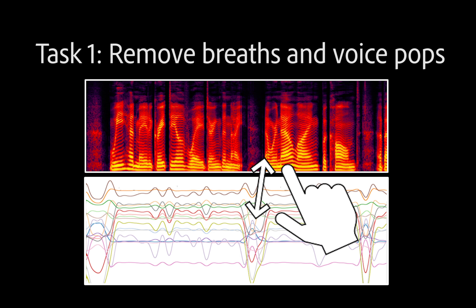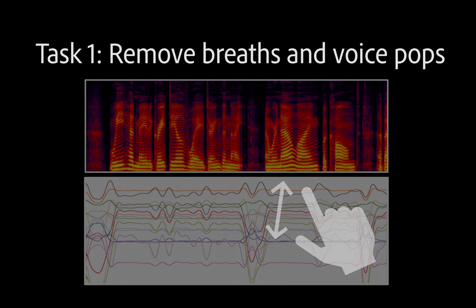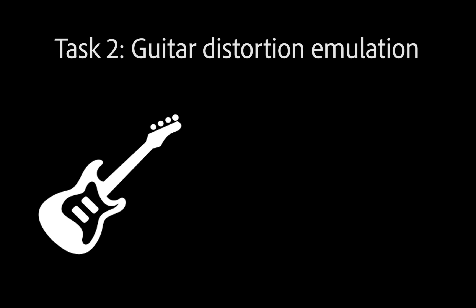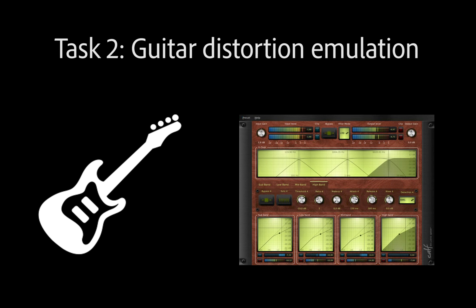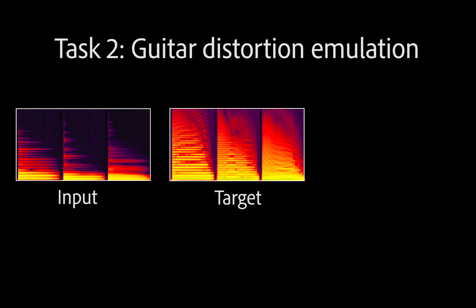We can even edit or adjust the automation to correct any issues and finish the production task with a creative human touch. For our second task, we train a neural network to emulate the distortion sound of a famous tube amplifier using nothing more than a free open source multiband compressor. We can listen to the non-distorted input to our distortion model, then the target ground truth tube amplifier output, and our matched, optimized result.